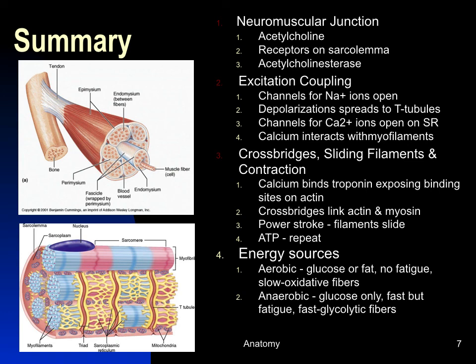To summarize: we've covered the events at the neuromuscular junction, excitation-contraction coupling where the sarcoplasmic reticulum releases calcium, and the interaction between actin and myosin producing the power stroke. There are two energy sources — aerobic and anaerobic — both requiring ATP. We have specialized muscle fiber types, and different training produces different effects.